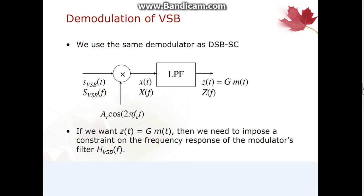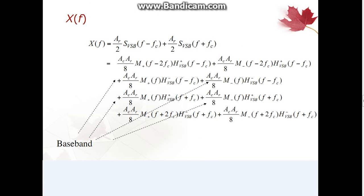If we want z(t) equal to Gm(t), then we need to impose a constraint on the frequency response of the modulator's filter H_VSB(f). This is the frequency response of the signal which is obtained at the receiver side. Thank you very much.